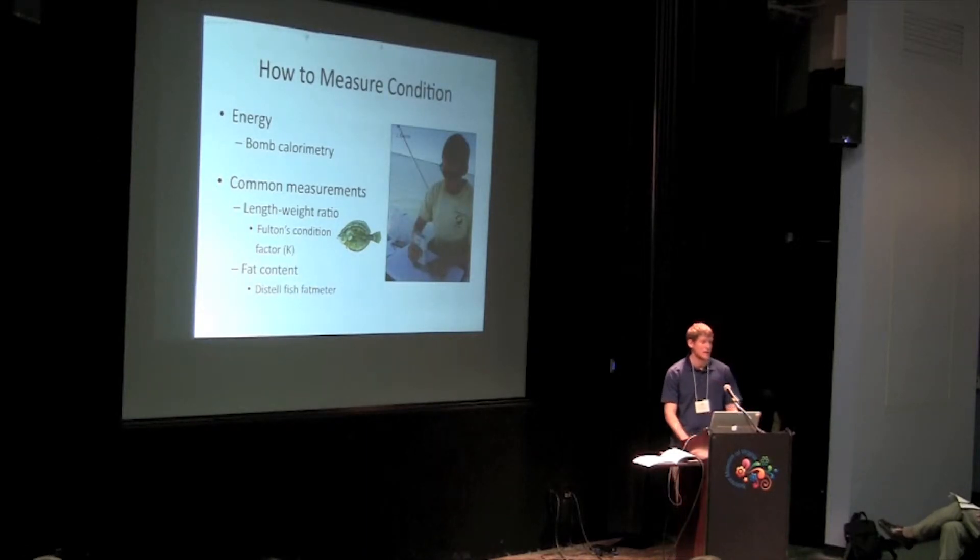We also looked at fat content, because fats contain a lot of energy and are important for survival. Some species store fats under their skin. So we used a piece of technology called the distal fish fat meter, which is shown in that picture, because the fat meter uses microwaves to measure that amount of fat stored underneath the skin. And it turns out that the fat meter does a good job of predicting energy for Atlantic croaker.